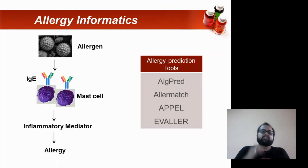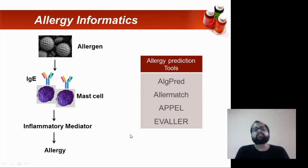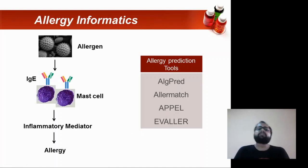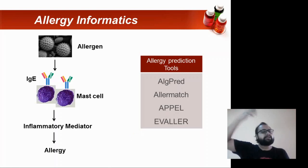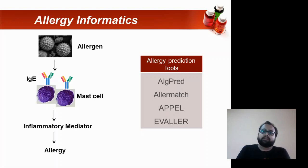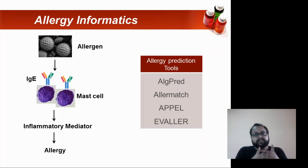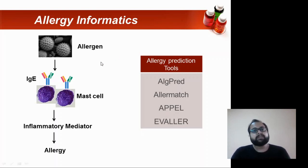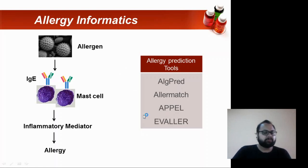The methods present in the backend of all of these prediction tools are the same methods used in B-cell and T-cell prediction — such as HMM, ANN, Machine Learning, structure-based, and sequence-based approaches. All of these methods studied previously are also used for allergy prediction.